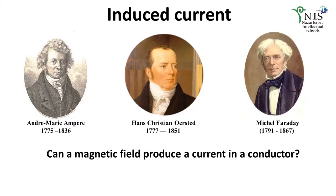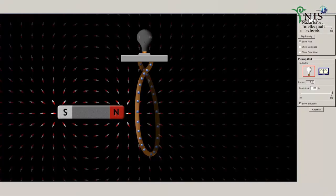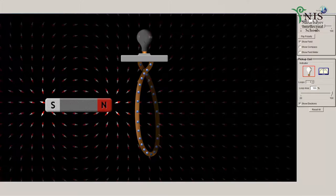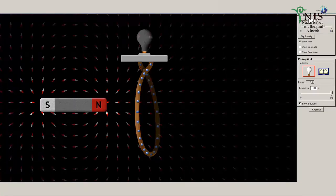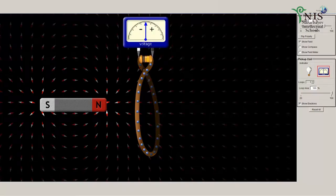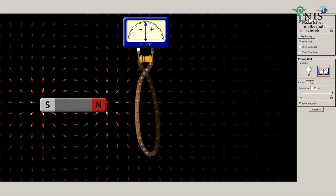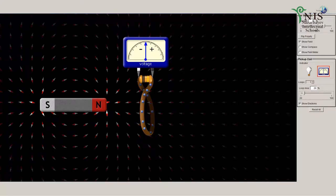Let's consider the following experiment with the help of a simulation. In this simulation we have a bar magnet with its own south and north poles. We already know that the direction of the field lines of this bar magnet goes from north to south. We also have a loop connected with a lamp, which can be removed and replaced by a voltmeter connected to a resistor. In this simulation we can also decrease or increase the number of loops and the size of the loop.